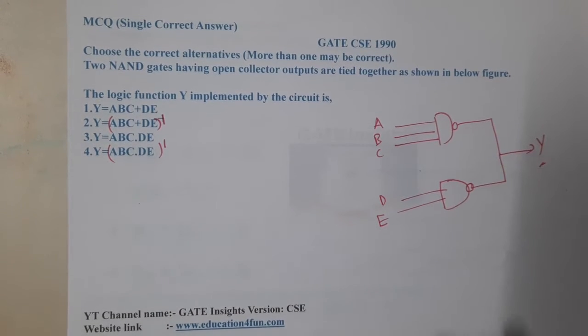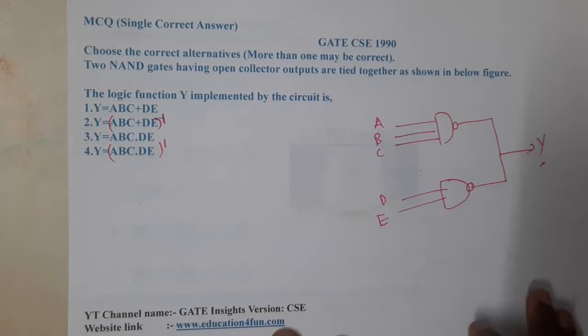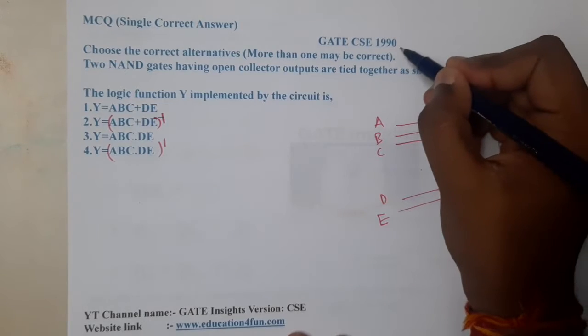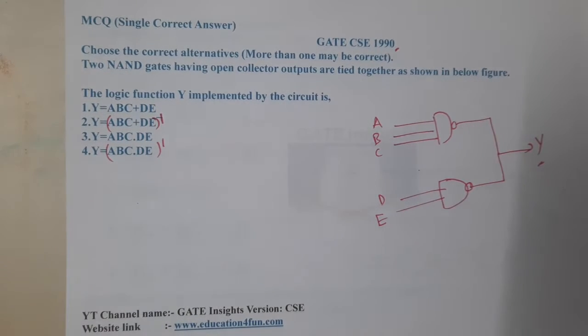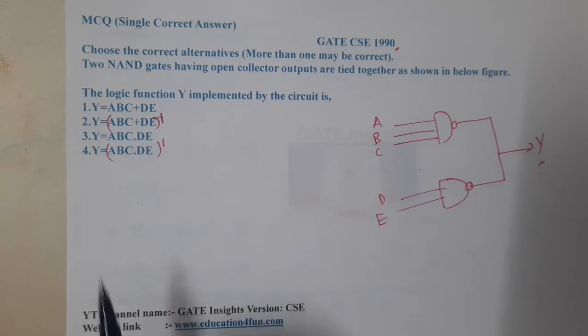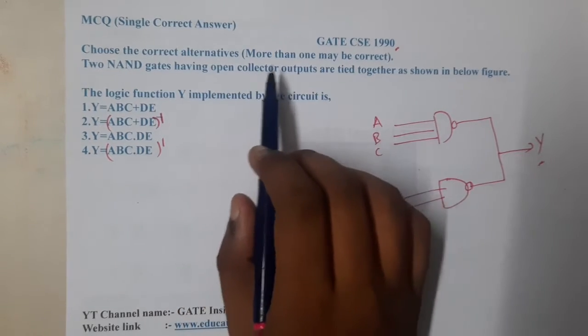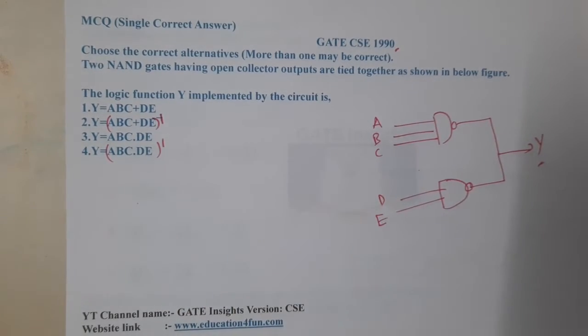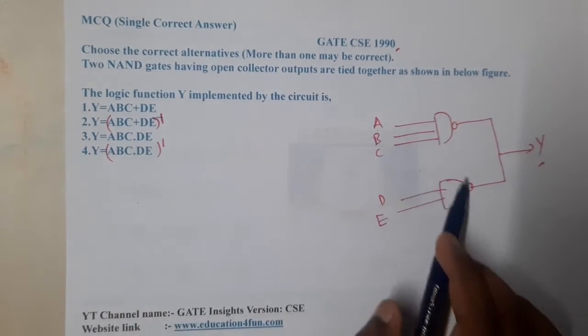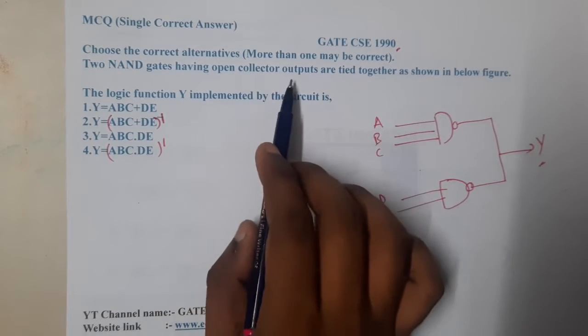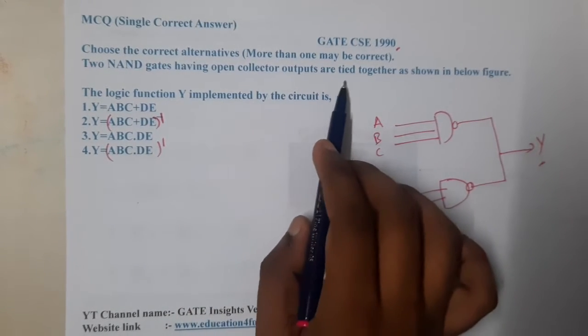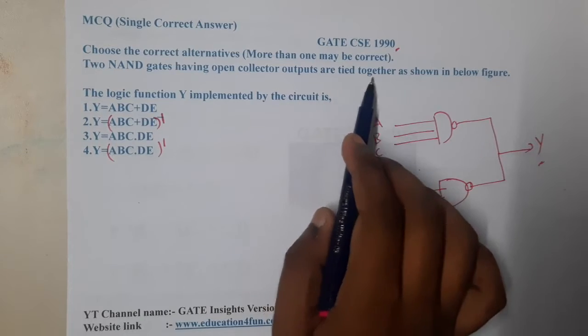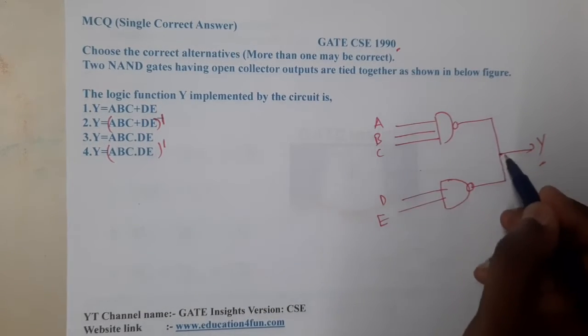Hello guys, we are back with our next lecture. In this lecture, let us go through the next question. This question belongs to GATE CSE 1990. The question is: choose the correct alternative. More than one answer may be correct. Two NAND gates having open collector outputs are tied together as shown in the figure.